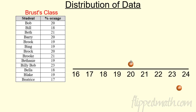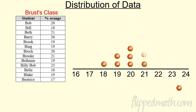Go ahead and use circles, dots, or X's. Put a dot at 20 for Bob. Bill is at 18. Beth is at 21. Mary's at 20. Brooke is at 19. Try to space them nicely and evenly so it shows what's going on — we want them nicely spaced when going vertically so we can compare heights. We've got another 21 for Brooke, 23 for Bethany, another 18, another 19 — 19's winning — and then a 17.